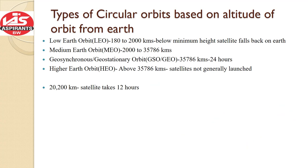Now let us see the types of circular orbits. We have broadly classified orbits as circular and elliptical. There are a number of circular orbits based on the altitude from the Earth's surface. These four types are: low Earth orbit, medium Earth orbit, geosynchronous or geostationary orbit — we will learn the difference in a subsequent lecture — and the higher Earth orbit.